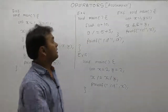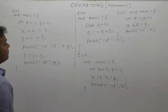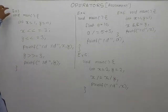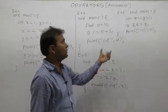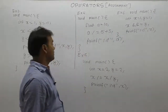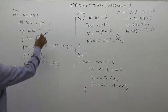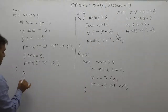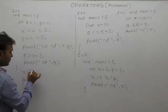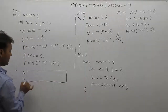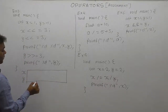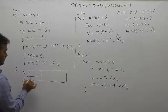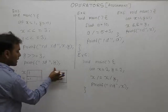Now let's see different examples based on assignment operations — examples 3, 4, 5, and 6. In the first case, there are two variables x and y. The initial value of x is 1 and the initial value of y is minus 1. We will represent them directly in decimal and also in binary form.